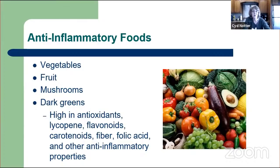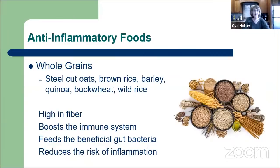Vegetables, fruits, mushrooms, and dark greens are anti-inflammatory because they're high in antioxidants, lycopene, flavonoids, carotenoids, fiber, folic acid, and other anti-inflammatory properties. Go for a big range of colors with your fruits and veggies to get lots of different phytochemicals—which just means plant chemicals. Whole grains such as steel-cut oats, brown rice, barley, quinoa, buckwheat, and wild rice are high in fiber and boost the immune system because they feed the beneficial gut bacteria, which reduces the risk of inflammation.